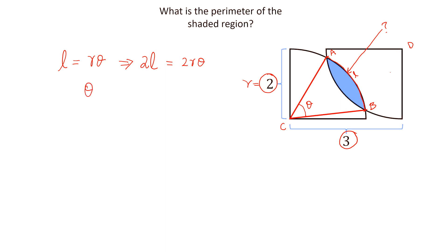But how can we calculate angle theta? Draw another line from A to B and then draw another line from C to D. Line CD bisects AB — let this intersection point be E.